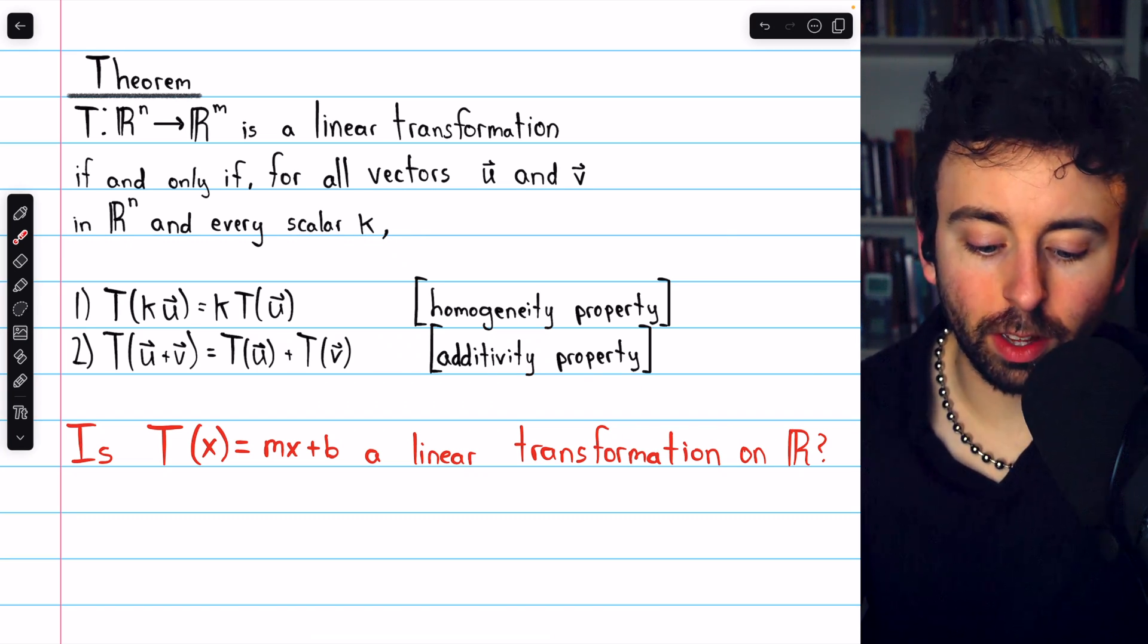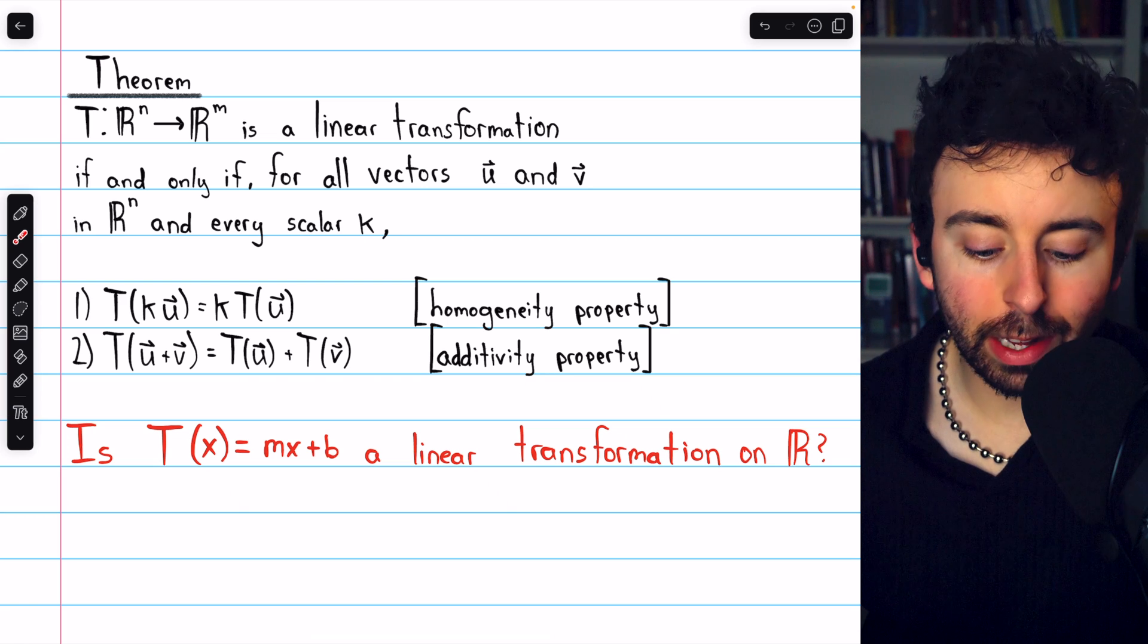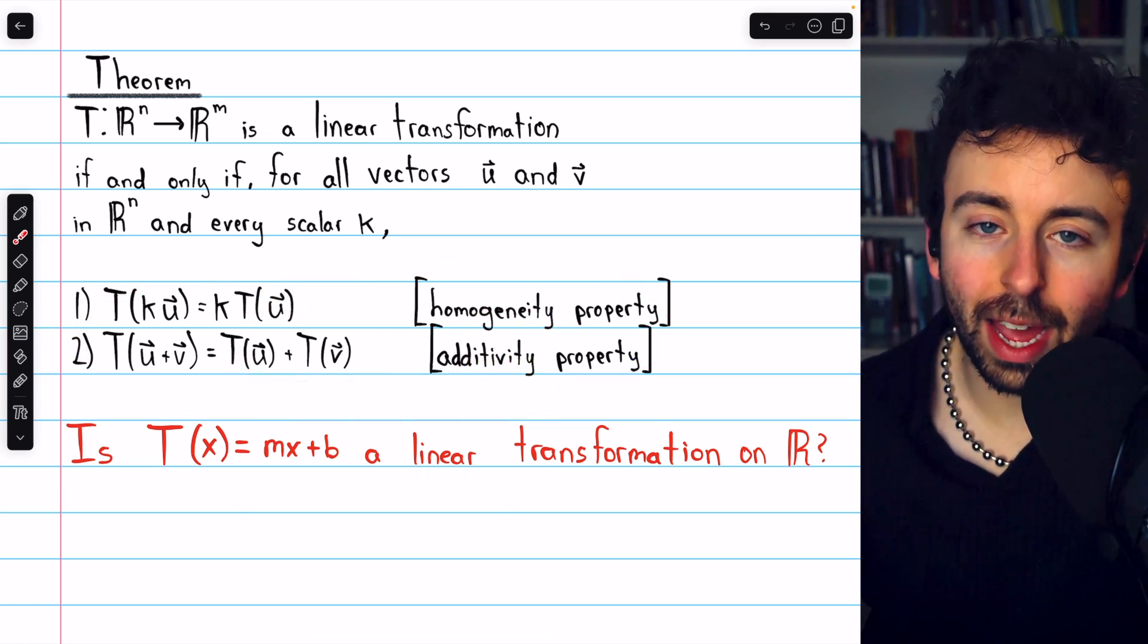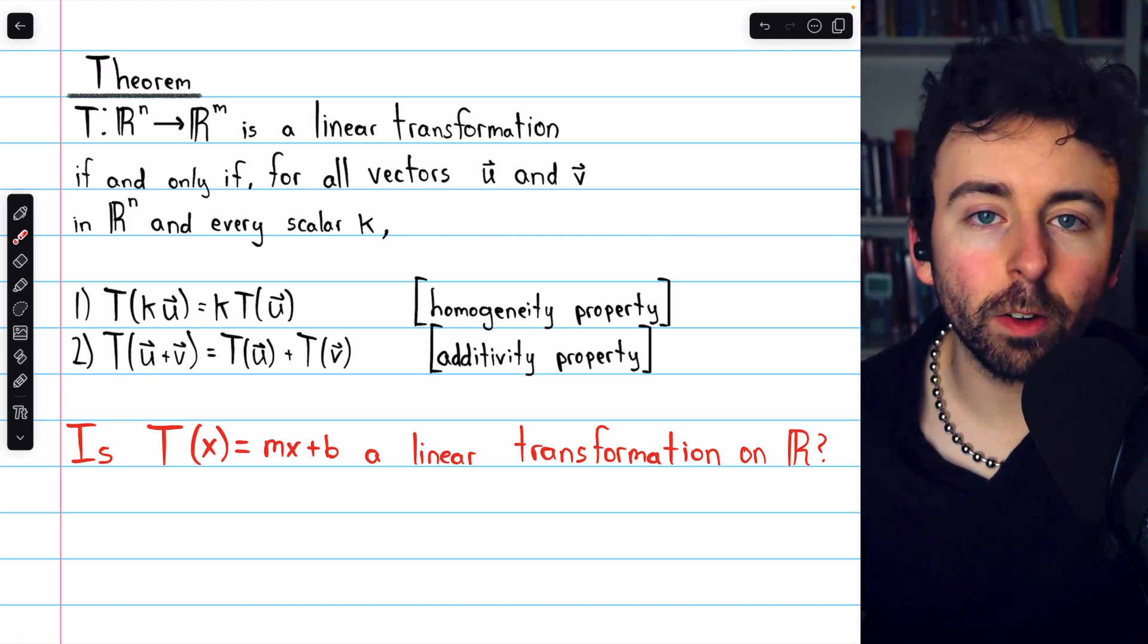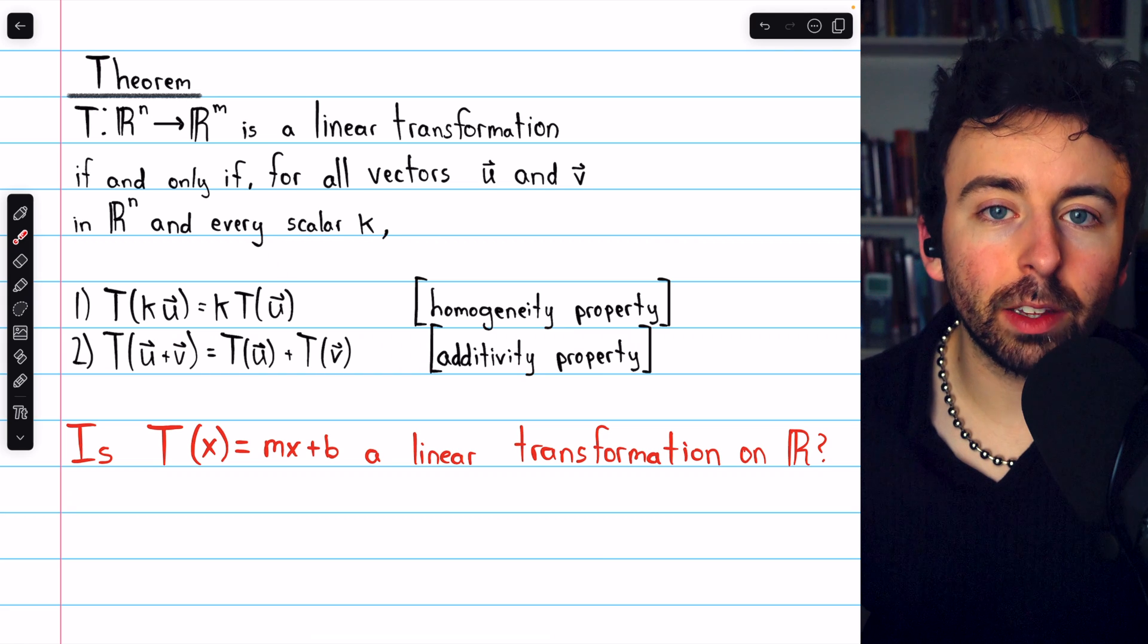When we discussed matrix transformations from Rn to Rm, we mentioned that if a transformation has these two properties—the homogeneity property and the additivity property—then that is called a linear transformation. So these are the properties that define a linear transformation.